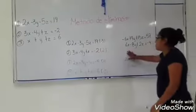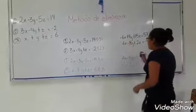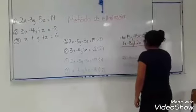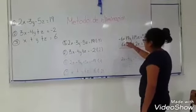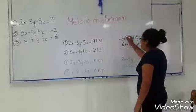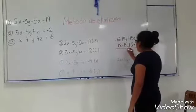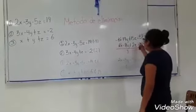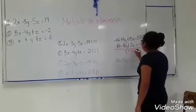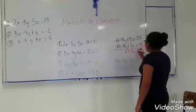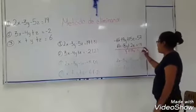Ya multiplicado nos da los coeficientes correspondientes, y entonces tendríamos que eliminar a las X. Menos 6 más 6 se cancela. Más 9 menos 8 son Y, y más 15Z más 2Z son más 17Z, que es igual a 57 menos 4, es 53.